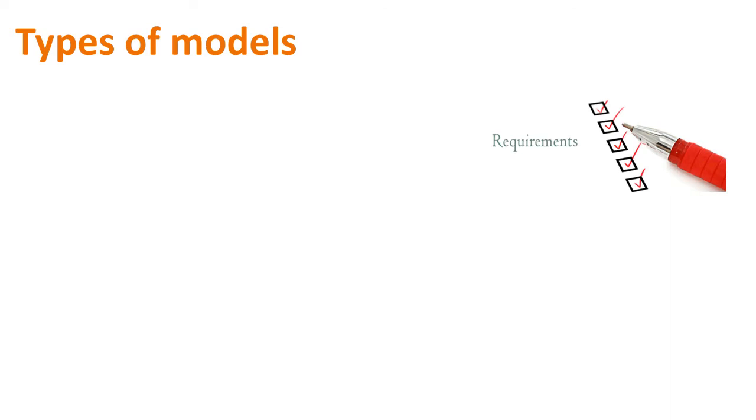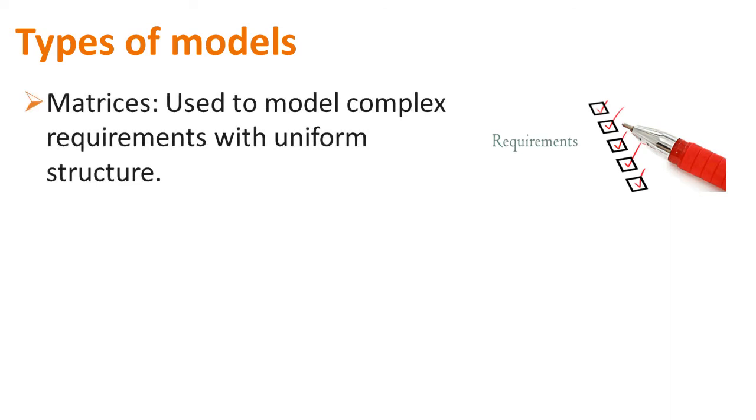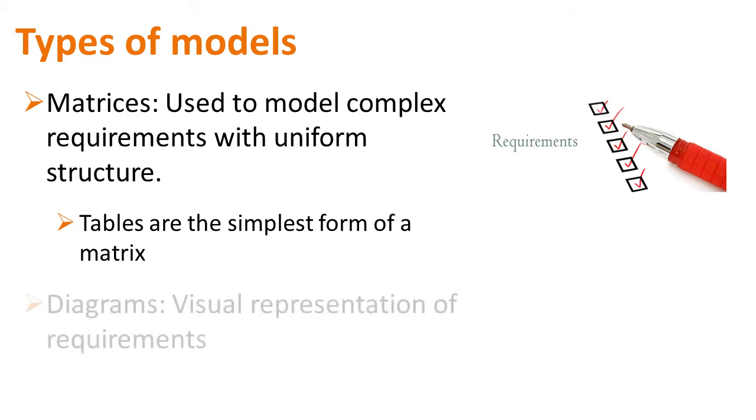Models can be matrices and diagrams. Matrices are used to model complex requirements with uniform structure. Tables are the simplest form of matrices. Many often, we do get confused with a similar sounding word, metrics. Metrics refers to measurements and numbers. Diagrams are visual representation of requirements.